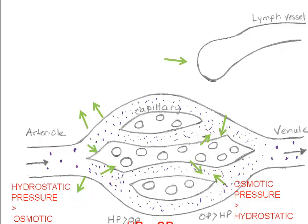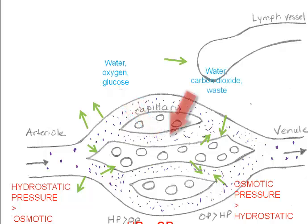Solutes now diffuse according to their concentration gradients. Nutrients like glucose, amino acids, and oxygen diffuse out of the capillaries. Wastes like carbon dioxide diffuse into the capillaries. Red blood cells and almost all the plasma proteins remain in the capillaries — only small substances leave.